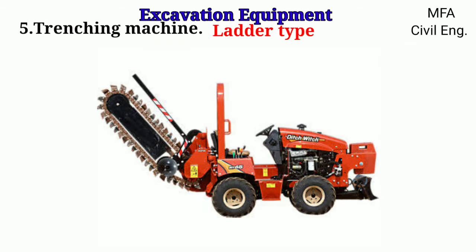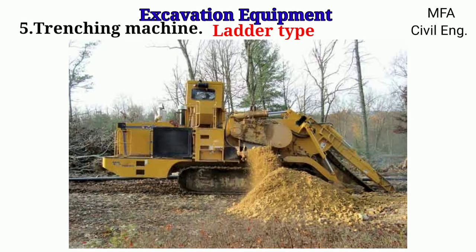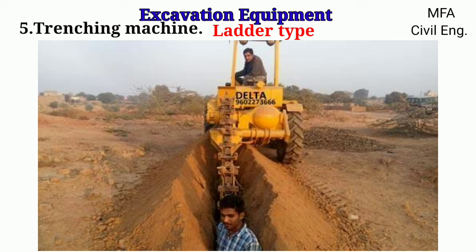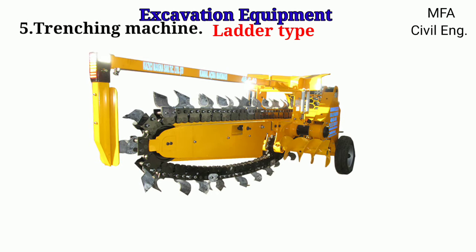The ladder type trenching machine consists of a telescopic ladder or boom with two endless chains on which detachable buckets are mounted. The excavated material is conveyed to a conveyor belt which disposes of the excavated earth to the two sides of the trench. With the help of gears, the speed of the machine can be adjusted. This machine can be used for excavating up to a depth of 10 meters and a width of three meters. It is not suitable for muddy or rocky soil.